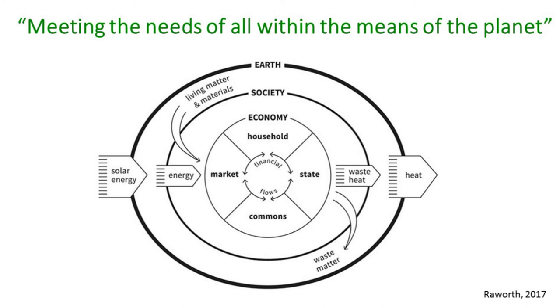Another expression of what sustainability may mean emerged in 2017 as the so-called donut model. The planet receives net solar radiation every year, which is turned into energy, creating living matter and materials that serve the economy. Within the economy you have households, the market, the state, and commons. As a result, waste, heat, and matter flow back out of the system. It's a simplistic but illuminating illustration of what sustainability may mean.